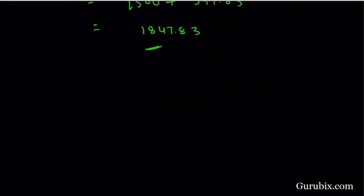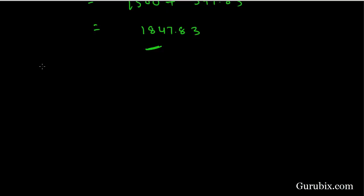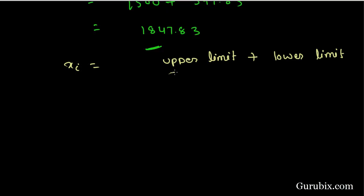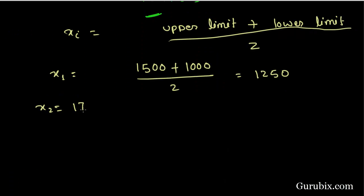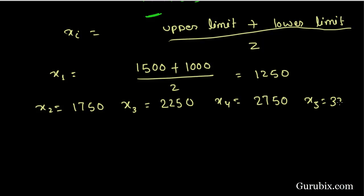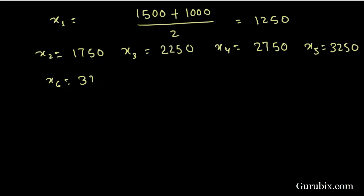Now we have to calculate mean. For calculating mean, we have to find xi. We know that xi equals the upper limit plus lower limit of any interval, divided by 2. So x1 equals the upper limit plus lower limit of the first interval. Similarly, x2 is 1750, x3 is 2250, x4 is 2750, x5 is 3250, x6 is 3750, x7 is 4250, and x8 is 4750.